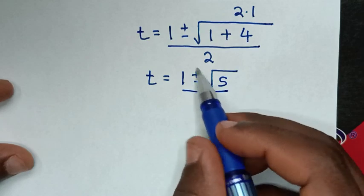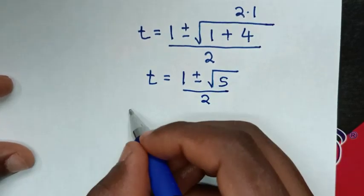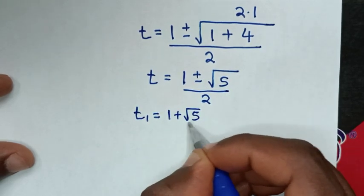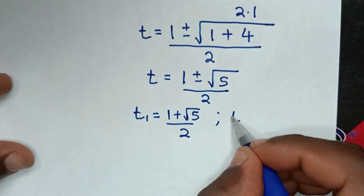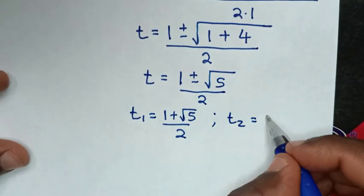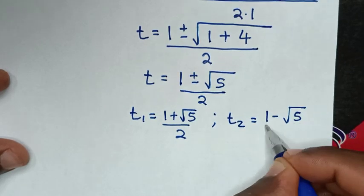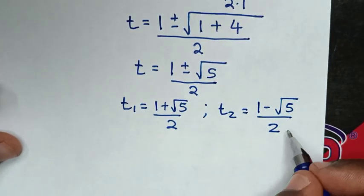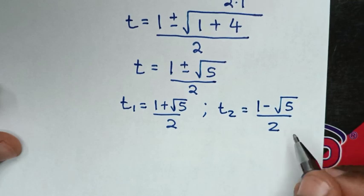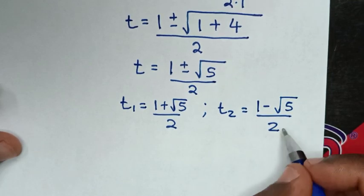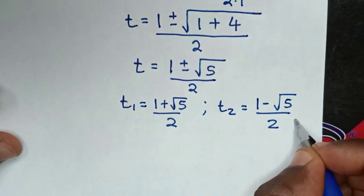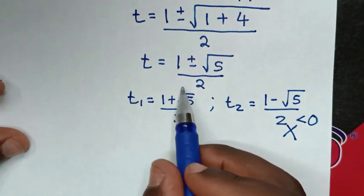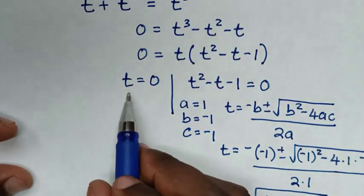Because of the plus or minus, we have two values of t. The first is t equals (1 plus square root of 5) over 2, and the second is t equals (1 minus square root of 5) over 2. But this second value is negative. To satisfy the equation, t must be positive or zero, so since this value is less than 0, it does not satisfy the equation and we discard it.